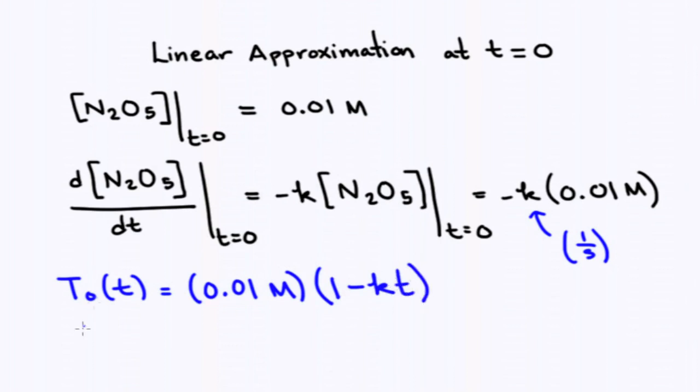Now, we are interested in approximating the value at one hour or 3600 seconds. Plugging in the value for k, we find that to two significant figures, T_0 at 3600 seconds equals 0.0094 molar. So the molarity is not so different. Now you are feeling relieved.